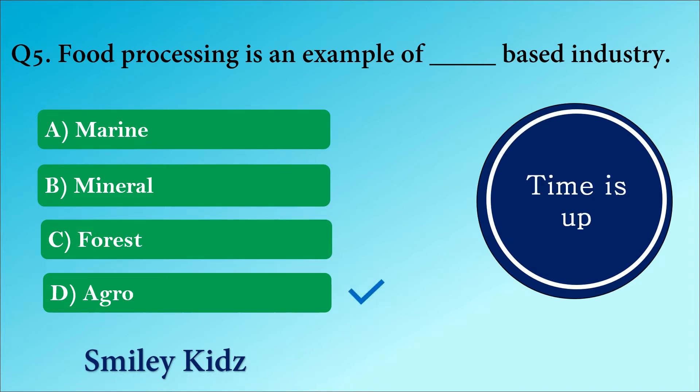The right answer is option D. Agro. Food processing is an example of agro based industry.